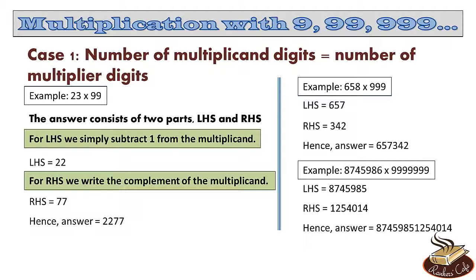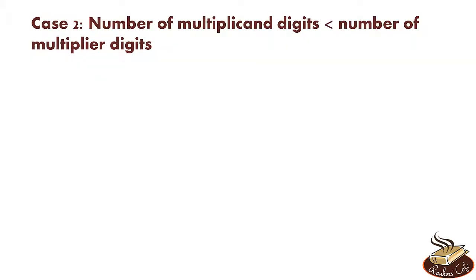Notice how fast our method is. Multiplying 8745986 with 7 nines is not an easy job. But by following our process, you can get the answer in maybe 10 seconds. In fact, even less than that. Now let's go to the second case where the number of multiplicand digits is less than the number of multiplier digits.